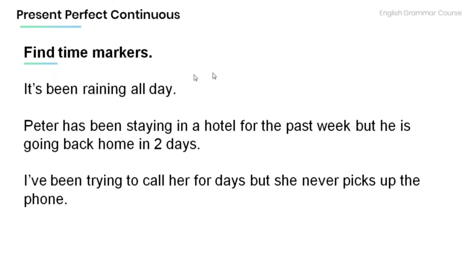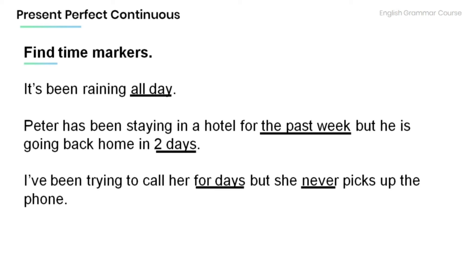Now read the sentences below and find the time markers. It's been raining all day — time marker: all day. Peter has been staying in a hotel for the past week, but he is going back home in two days — time markers: the past week, two days. I've been trying to call her for days, but she never picks up the phone — time markers: for days, never.